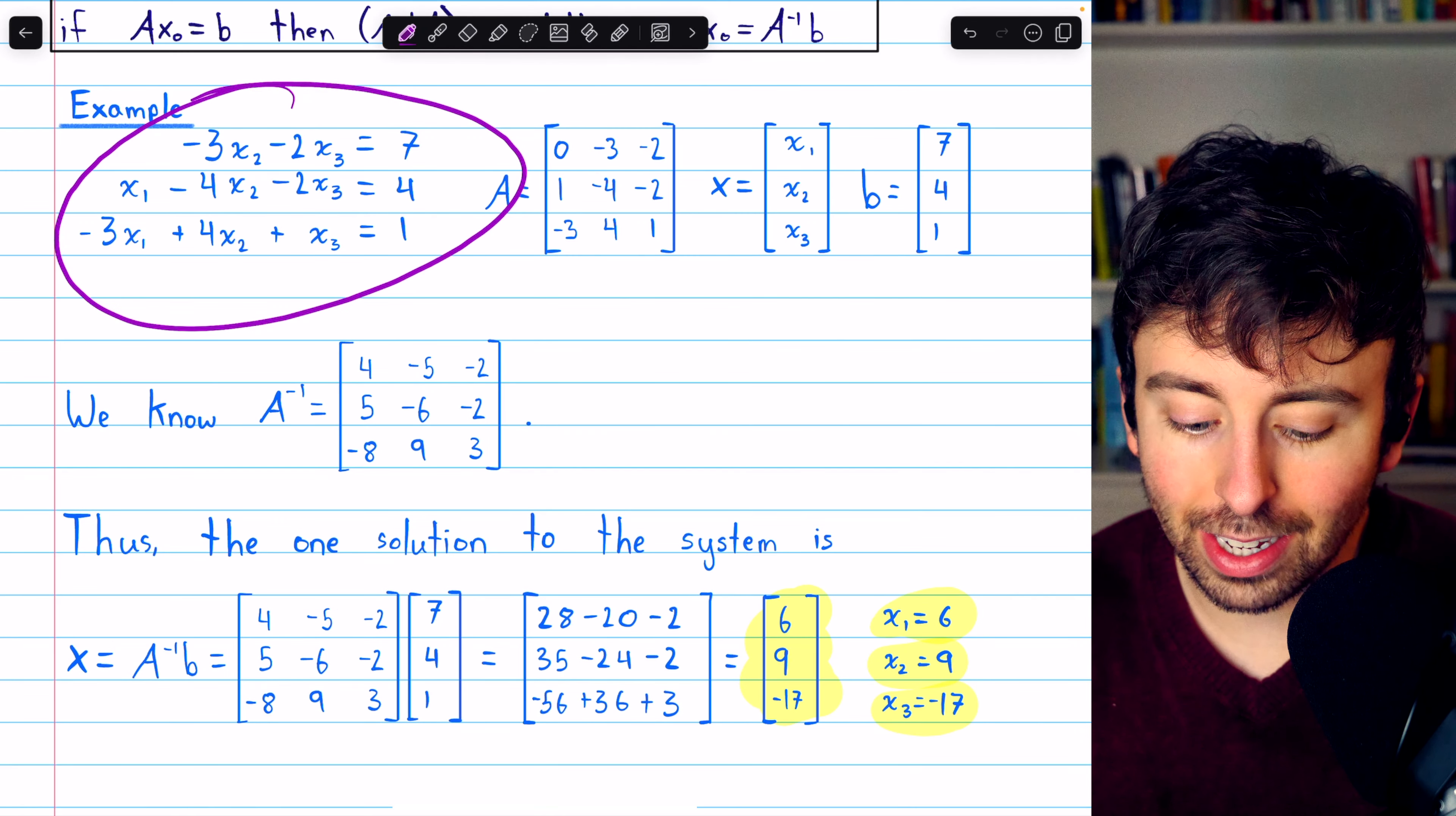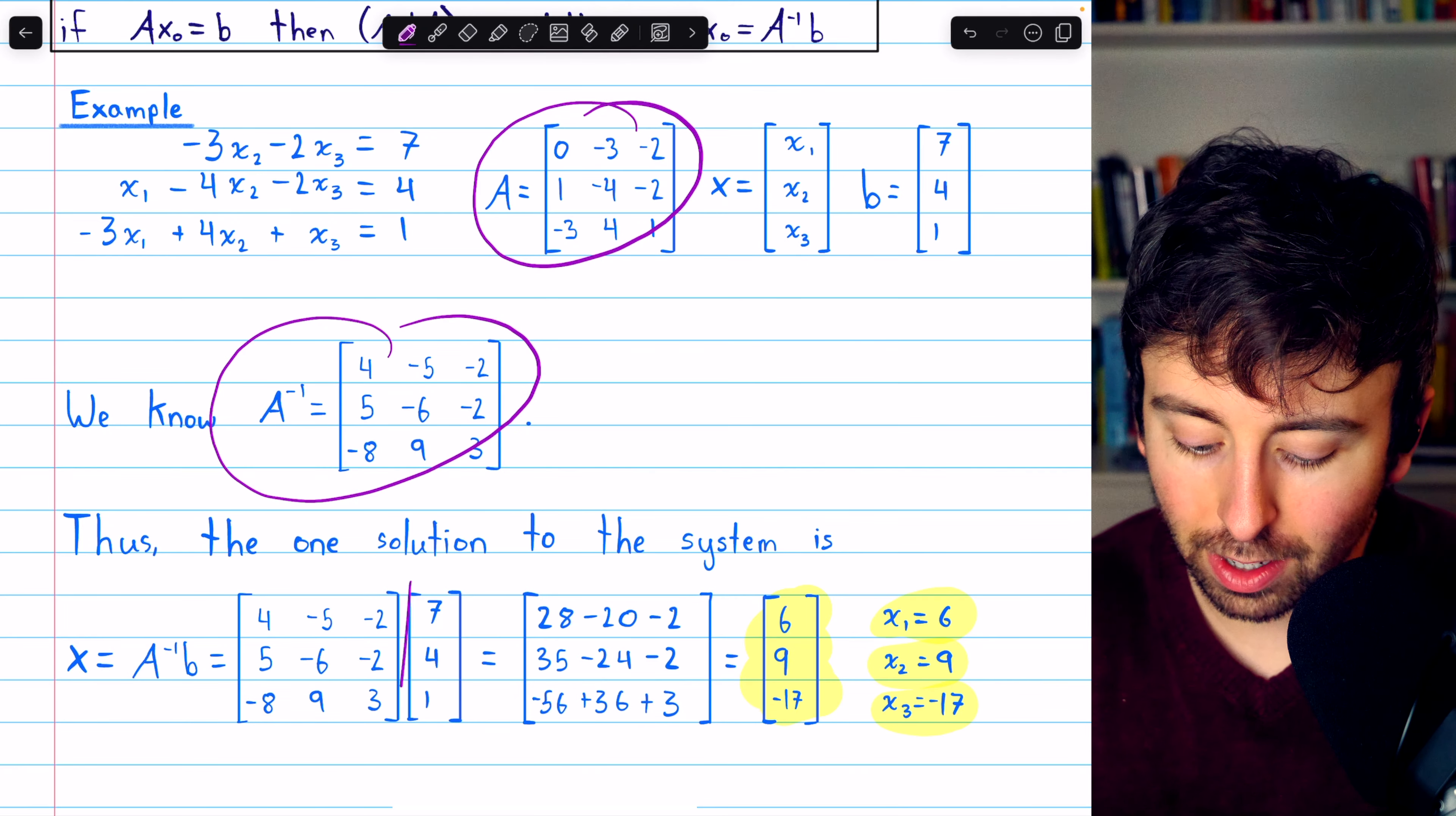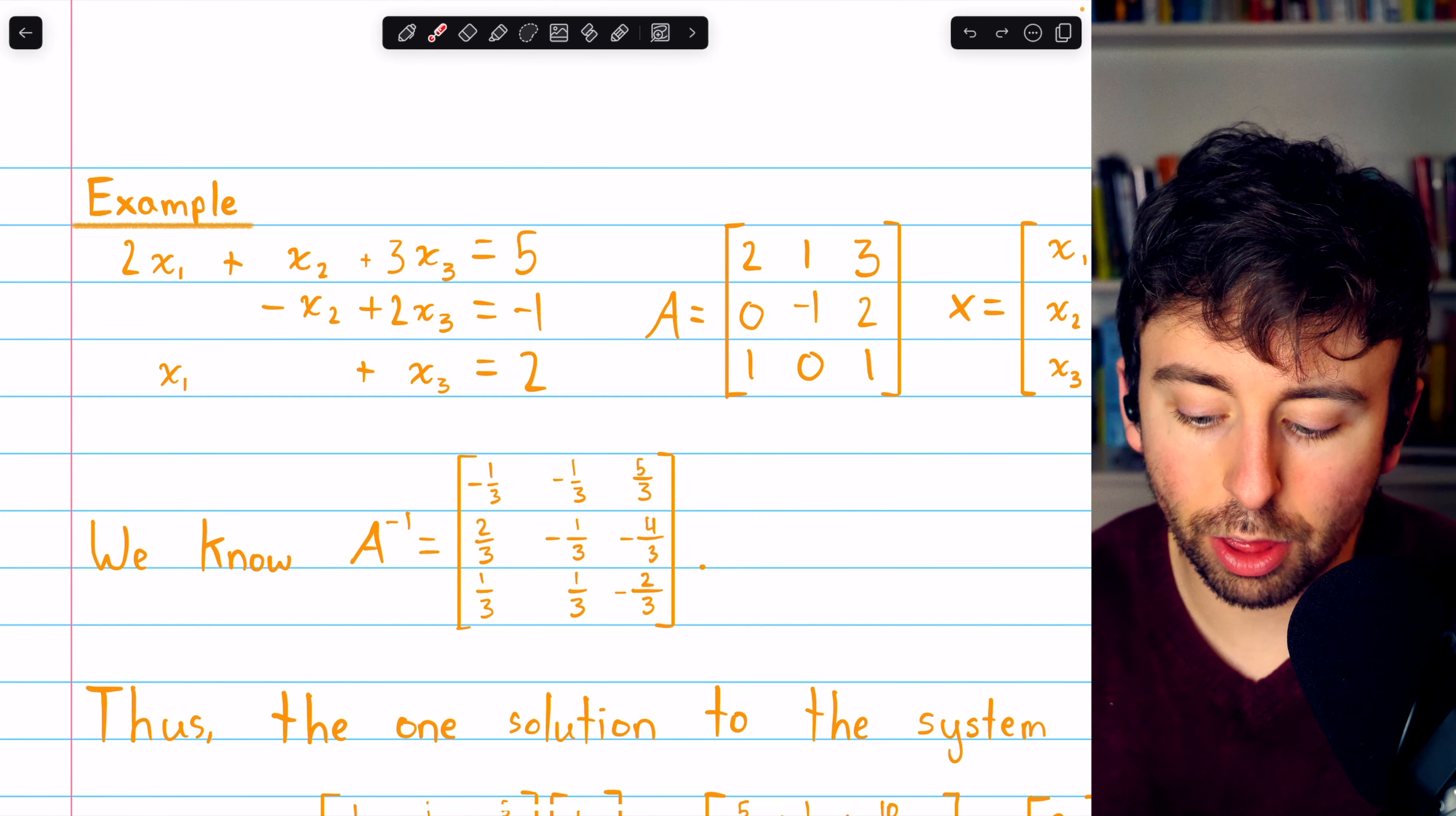All we had to do to find it was take the coefficient matrix, find its inverse, and multiply it by that constant column vector. Here is one more example. Again, we have three equations in three unknowns.